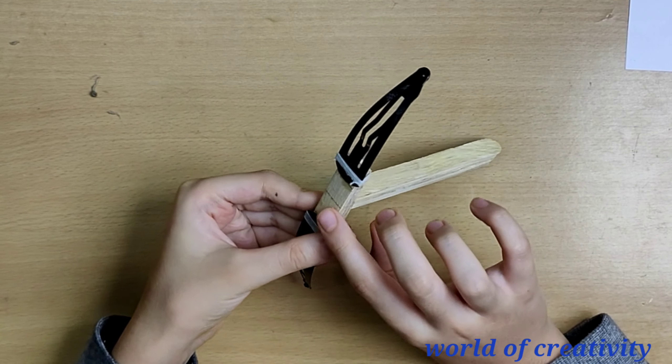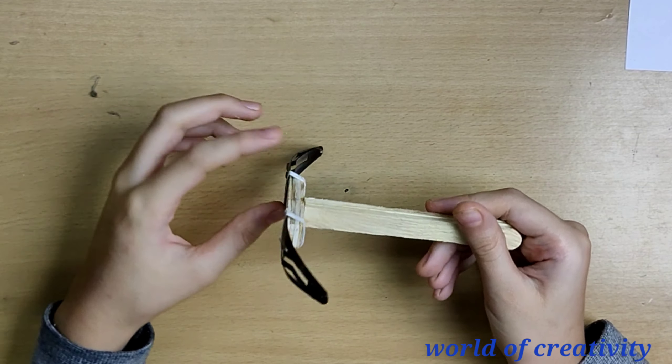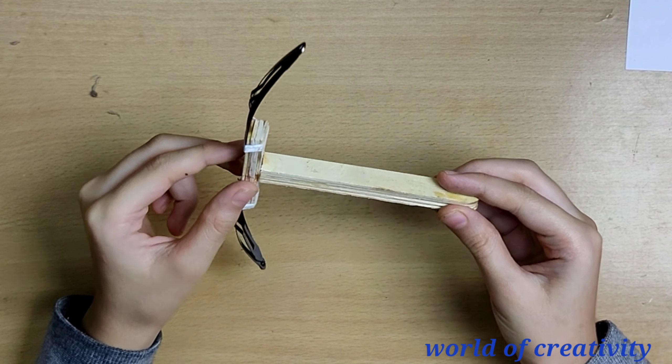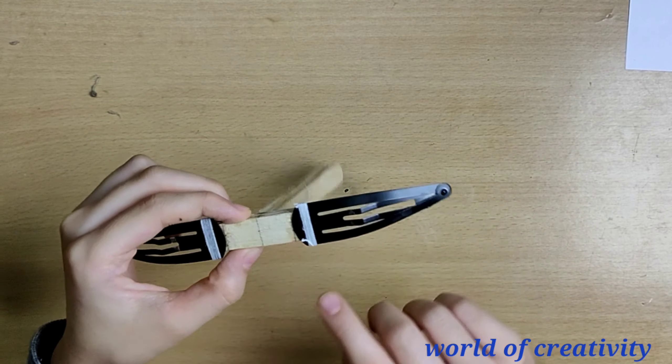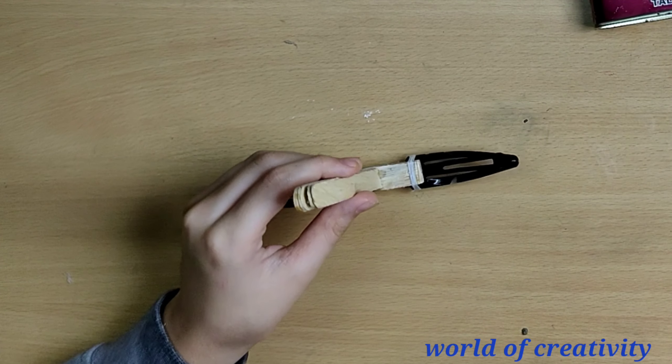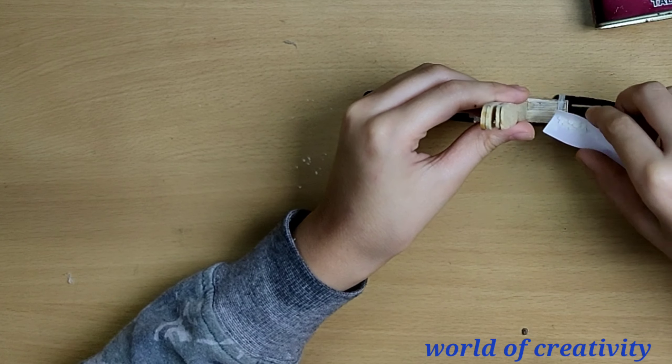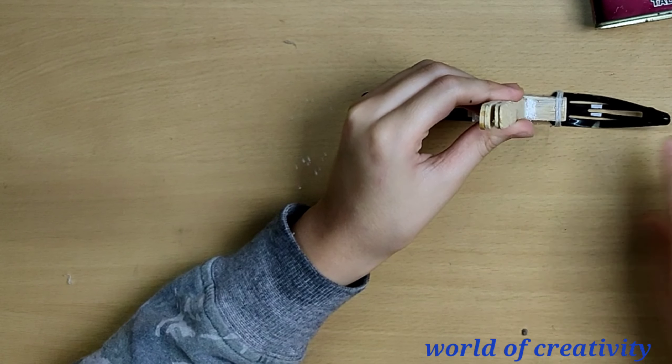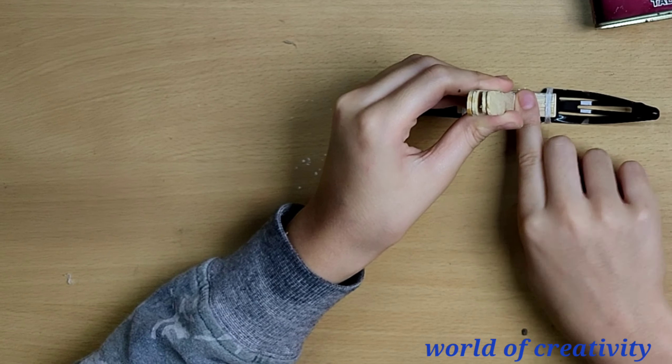Now we will stick these both parts with super glue. Make sure you stick it in the center. Now to make this joint strong, we will put some talcum powder on it and apply some super glue on it.